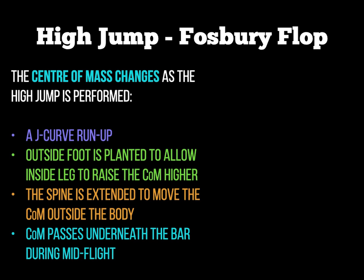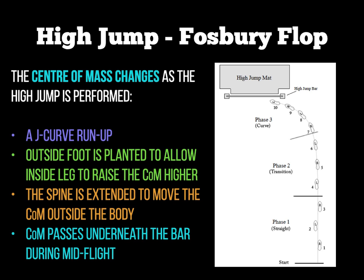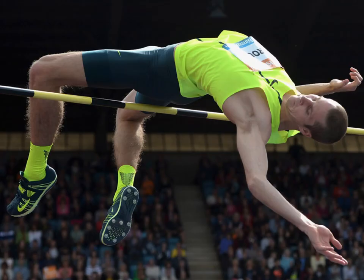For exam questions targeting high jump and centre of mass, you need those four bullet points. As promised, here is the picture of the J-curve run-up viewed from the top down — the athlete starts running straight and then curves slightly left in towards the high jump. That is the traditional J-curve run-up. Regarding the final point about the centre of mass going beneath the bar: as the athlete curves their body backwards deliberately, the centre of mass would be around about there in the picture, because the weight is balanced at that point, making it easier for the athlete to cross over the bar without clipping it.